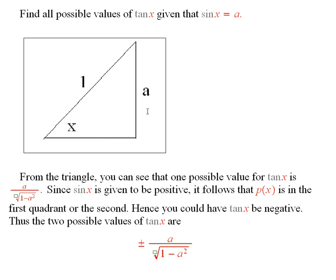the length of this bottom side is the square root of 1 minus a squared. So you see, one possibility for the tangent of x would be a over the square root of 1 minus a squared. This side divided by this side.